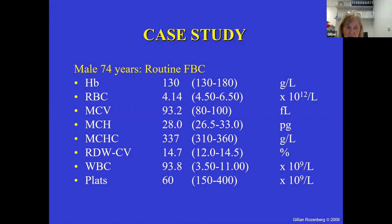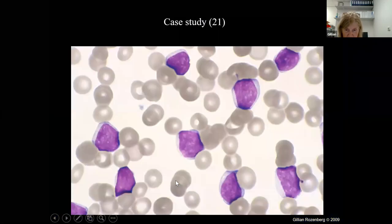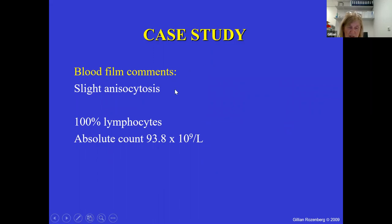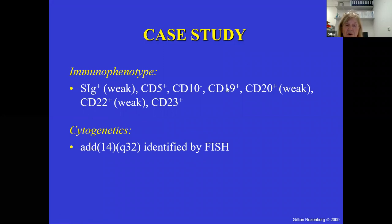Case 21: a 74-year-old male. Hemoglobin is on the lower limit of normal; white cell count quite high; platelet count low. The blood film shows mature, normal-looking lymphocytes. The absolute lymphocyte count was 93.8. He was CD5 positive. Diagnosis: chronic lymphocytic leukemia / small lymphocytic lymphoma (CLL/SLL).